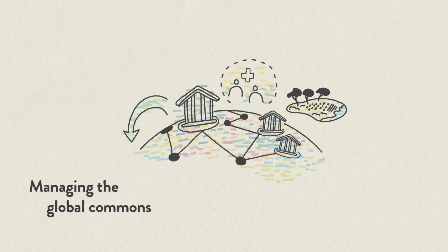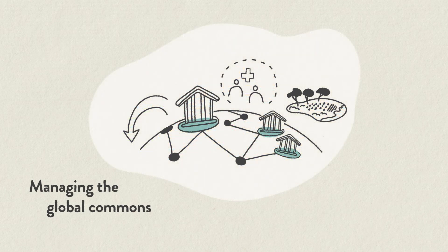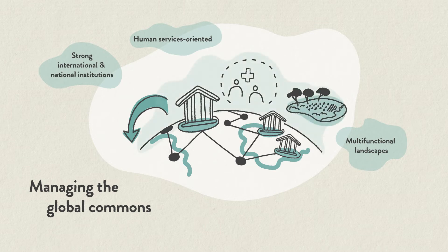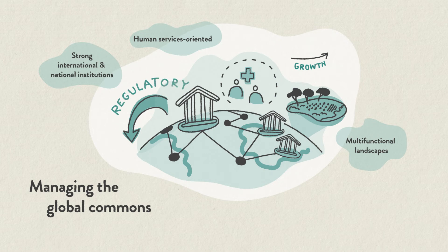Our third scenario, managing the global commons, includes international and national institutions as key drivers for sustainable development. This scenario features moderate economic growth and an orientation towards human services. The transition towards sustainable development is orchestrated by states and global institutions, and regulatory policies are part of the policy mix.